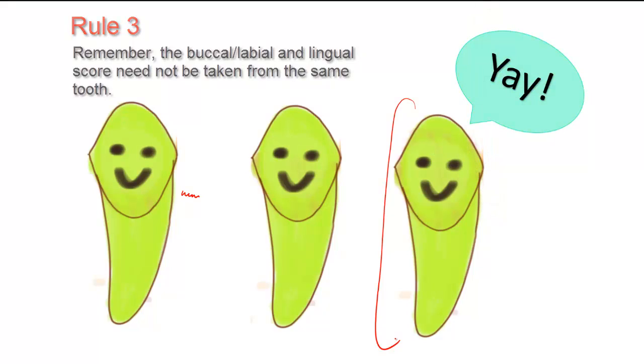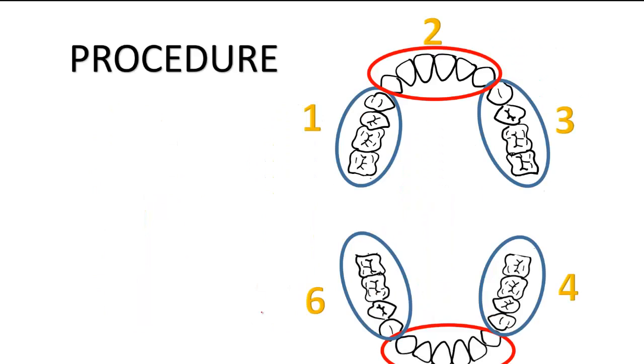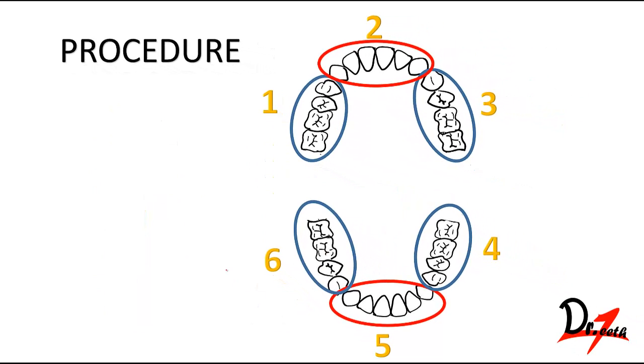Now the procedure: you start with quadrant one, score the buccal and then the lingual, then proceed similarly through the other quadrants and the lower arch.